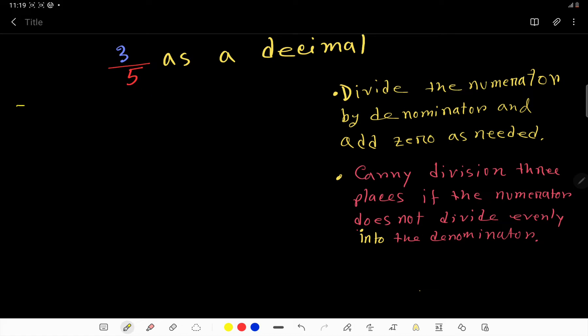3 over 5 as a decimal. To convert this fraction to decimal, we have to divide the numerator by the denominator. That is, we have to apply the long division method.